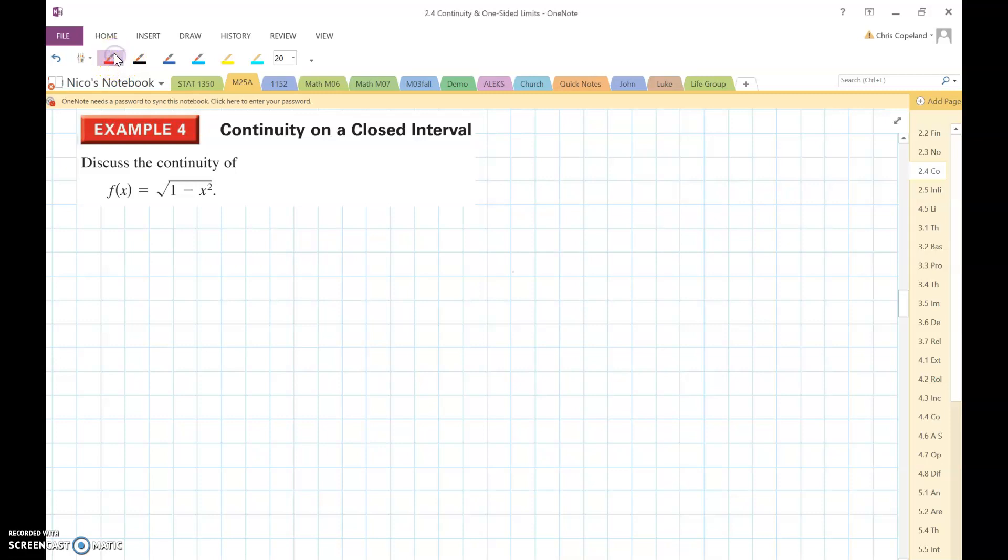So we just talked about the definition of continuity on a closed interval. Okay, so first of all, there's basically three conditions. Condition one, it would have to be continuous on the open interval.